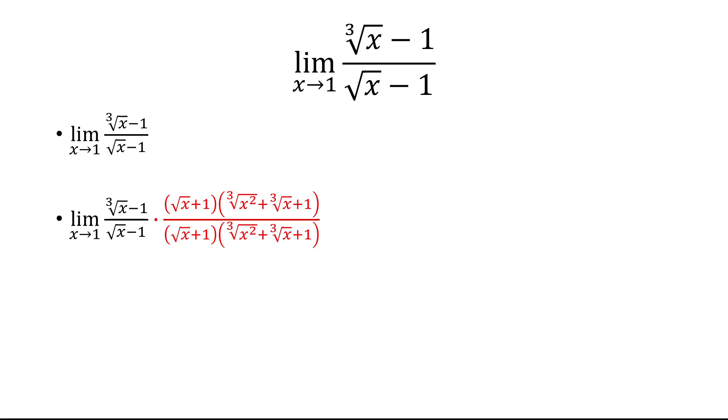And so the idea here is, if I have a cubed minus b cubed, that's going to be a minus b times a squared plus ab plus 1. Okay, so that's what I have.